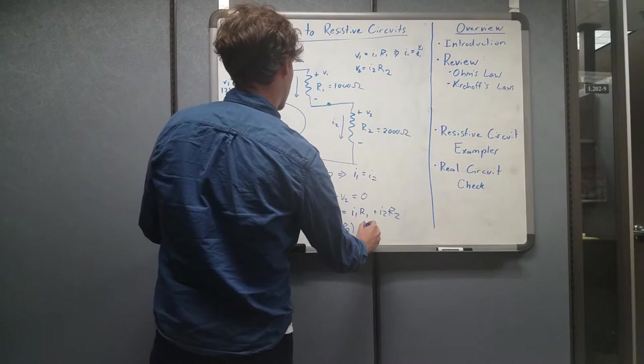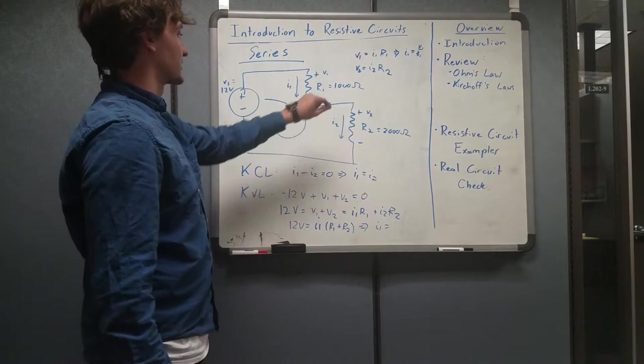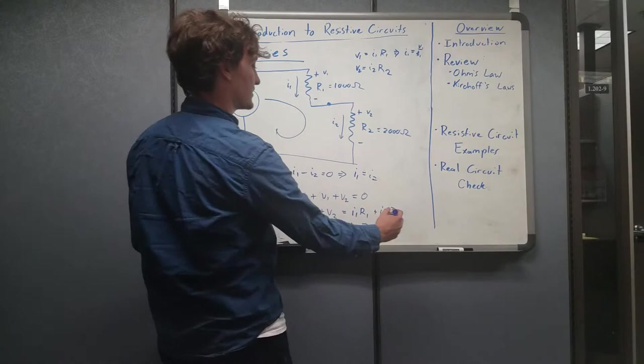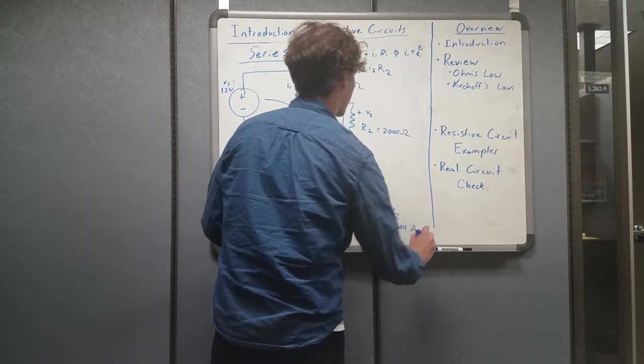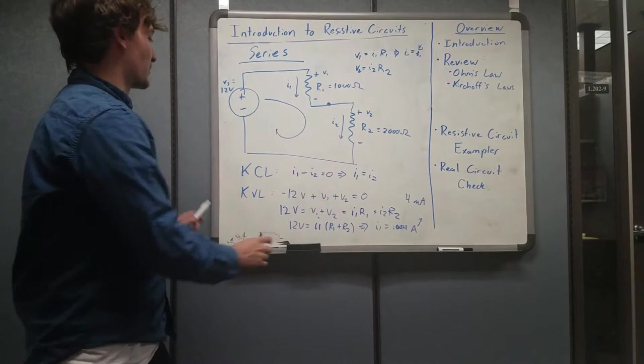And so with this new knowledge in mind, we can go ahead and say that I1 is equal to, R1 is 1,000, R2 is 2,000. So 12 volts divided by 3,000 is what that would add to, and we'll go ahead and call it and keep it in the same units, 0.004 amps, which is the same as 4 milliamps.